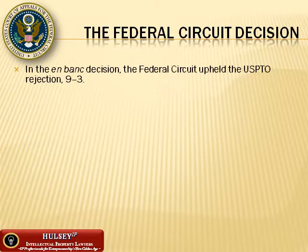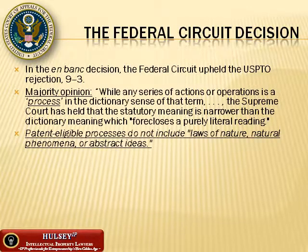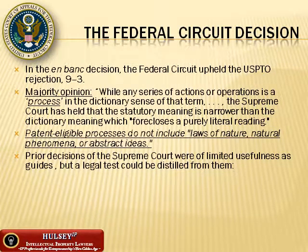The en banc Federal Circuit upheld the rejection by the U.S. Patent and Trademark Office in a vote of 9 to 3. The majority opinion by Chief Judge Paul Michel characterized the issue as whether the claimed invention is a patent-eligible process as the patent statute uses that term. While any series of actions or operations is a process in the dictionary sense, the Supreme Court has held that the statutory meaning is narrower, which forecloses a purely literal reading. Patent-eligible processes do not include laws of nature, natural phenomena, or abstract ideas. The court concluded that prior decisions of the Supreme Court were of limited usefulness as guides because they represented polar cases on the abstraction and concreteness spectrum.